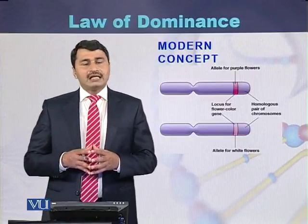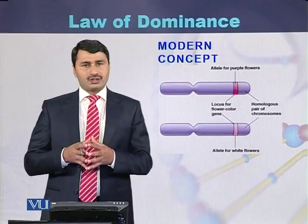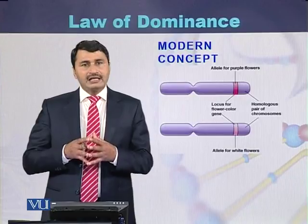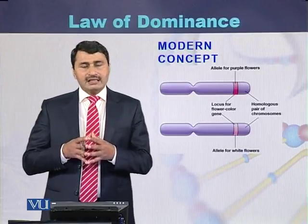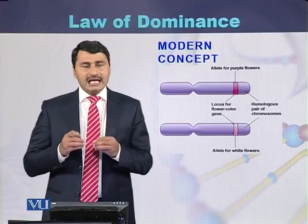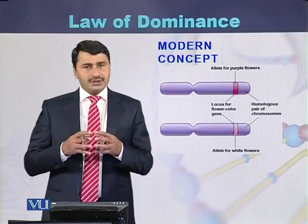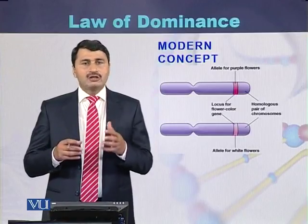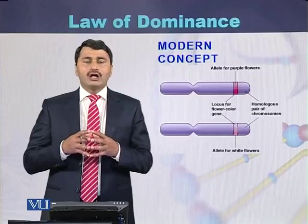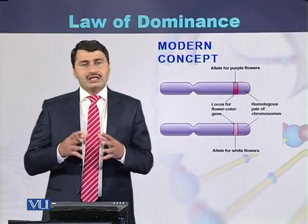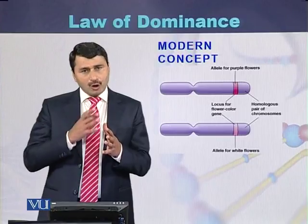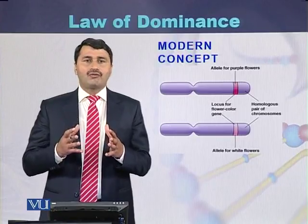In the diagram, we can see a pair of chromosomes. One chromosome inherited from the father carries the allele for purple color, and the second chromosome inherited from the mother carries the allele for white color flowers. Because purple color is dominant over white color, the purple color flower dominates. This is the law of dominance: during contrasting traits, one version of the trait dominates over the second version of that particular trait.